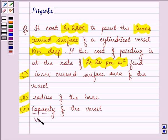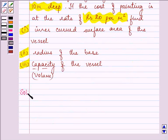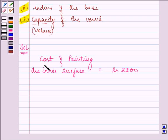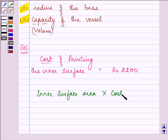Capacity means we need to find the volume of the vessel. Now, cost of painting the inner surface is given as rupees 2200. We know that we can find the cost of painting the inner surface by multiplying the inner surface area by cost per meter square. Then we will get the full cost.